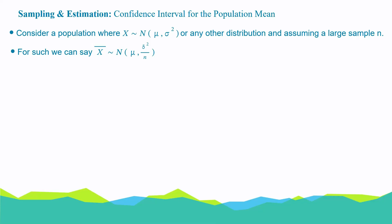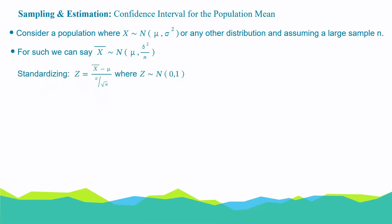Now, standardizing this, we know that z will be equal to x bar minus mu over sigma over root n, where z follows a normal distribution of mean 0 and variance 1.